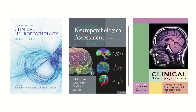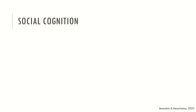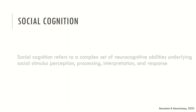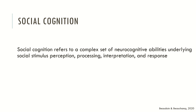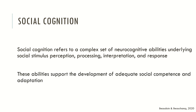Now let's take a brief look at social cognition. Social cognition refers to a complex set of neurocognitive abilities underlying social stimulus perception, processing, interpretation and response. These abilities support the development of adequate social competence and adaptation.